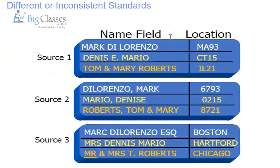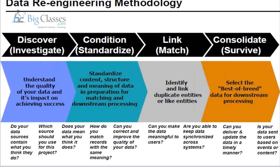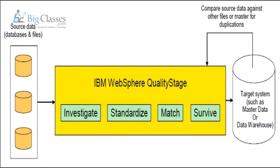We should first check whether this data is valid — if it's valid, convert it; if not, reject it and discuss with the business. These validations should happen before processing into the warehouse. That's why we have Quality Stage. Even in the market, if you go to Indeed or similar job portals, you'll find that Quality Stage has separate requirements, so it's better to have Quality Stage knowledge along with DataStage.